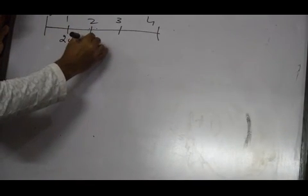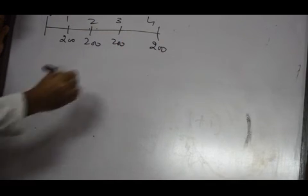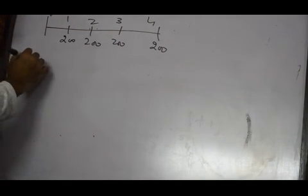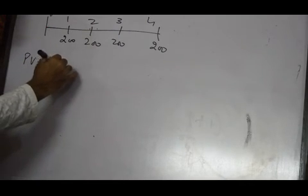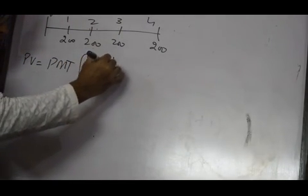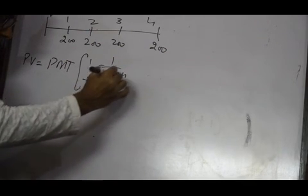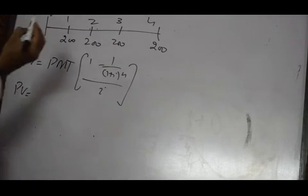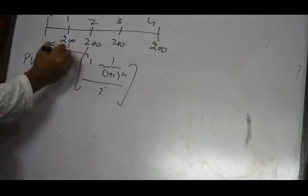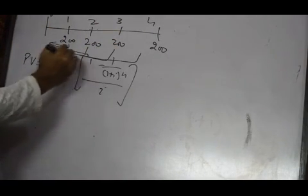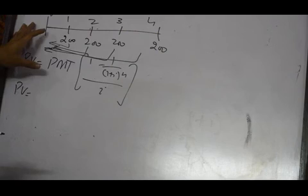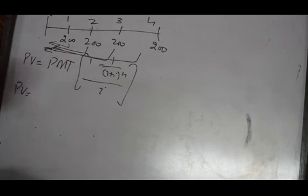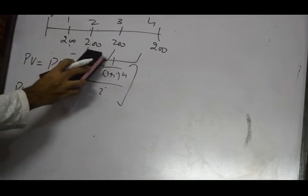This is an ordinary annuity and I will compute the value. The formula is PV equals PMT times 1 minus 1 over (1 plus i) to the power n, divided by i. I will calculate the present value of this annuity. One way is to take each payment one by one to time 0 and add them to the present value. But if the annuity extends to 50 periods, I would have to repeat this process 50 times, which is very time-consuming. So in order to avoid that exercise, we use the annuity formula.